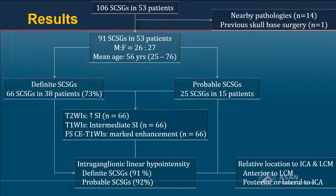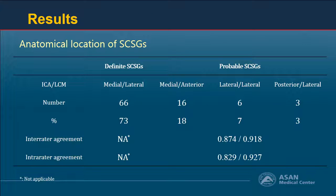Among 91 localized neck sites, 66 had a typical location and showed T2 high, T1 intermediate signal intensity with marked contrast enhancement. The previously mentioned intraganglionic linear hypointensity was noted in more than 90% of both groups on contrast-enhanced fat-saturated imaging. Regarding anatomic variation, the typical location was observed in only 73%; variations included anterior to the longus capitis muscle in 18%, lateral to the ICA in 7%, and posterior to the ICA in 3%. The study showed excellent inter-observer and intra-observer agreement.